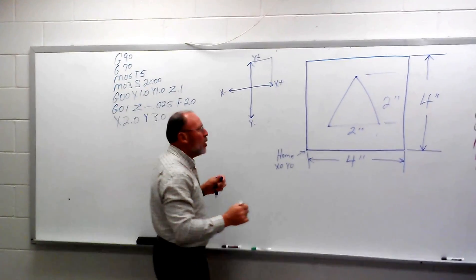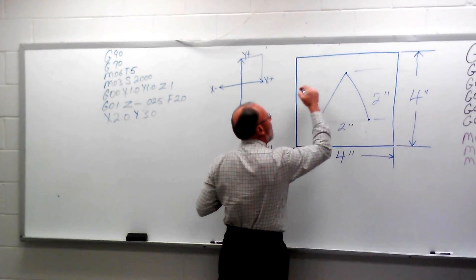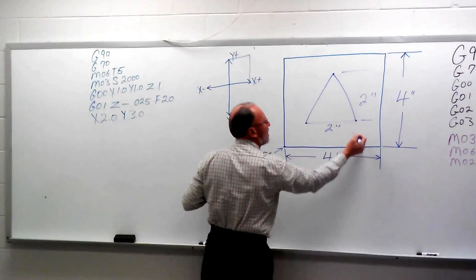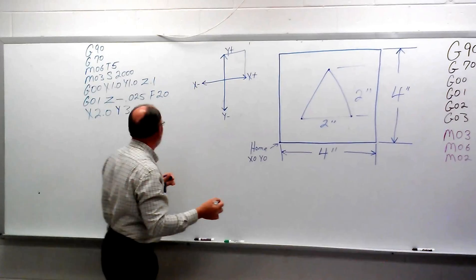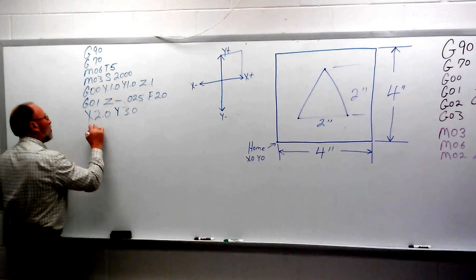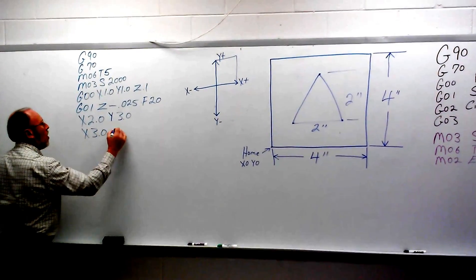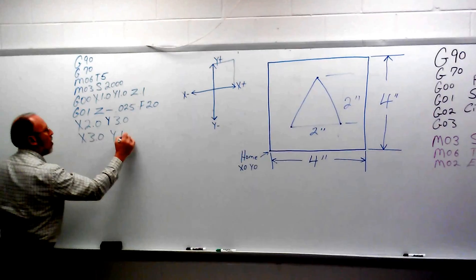Another diagonal move will get us to this point. From here all the way to here is going to be 3 in our X, and from here to here is 1 in our Y. So X will be 3.0, and Y is going to be 1.0.